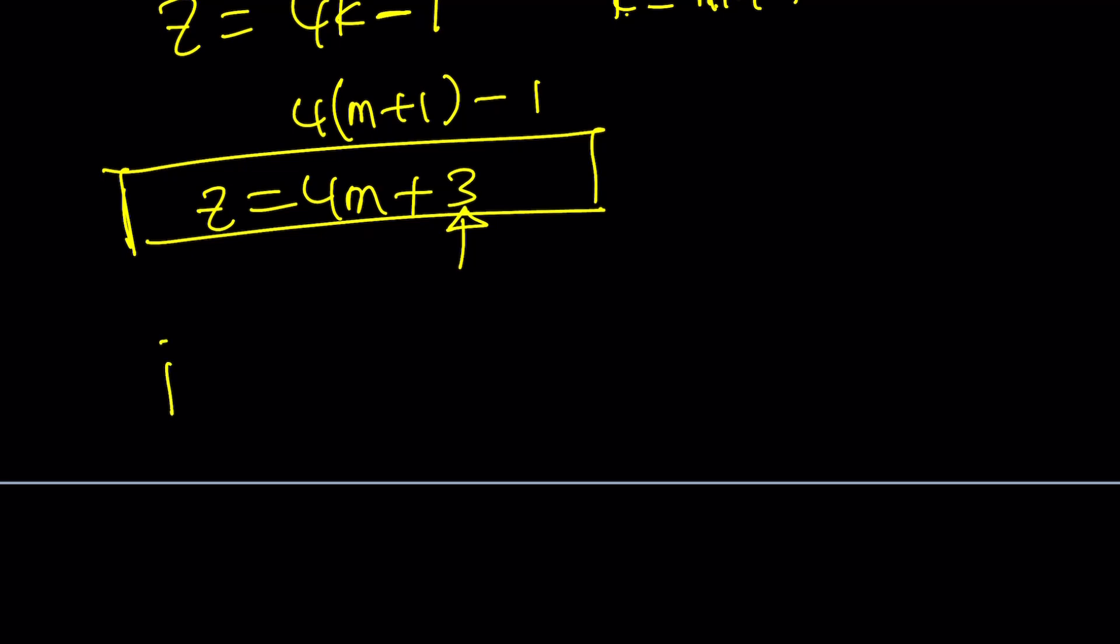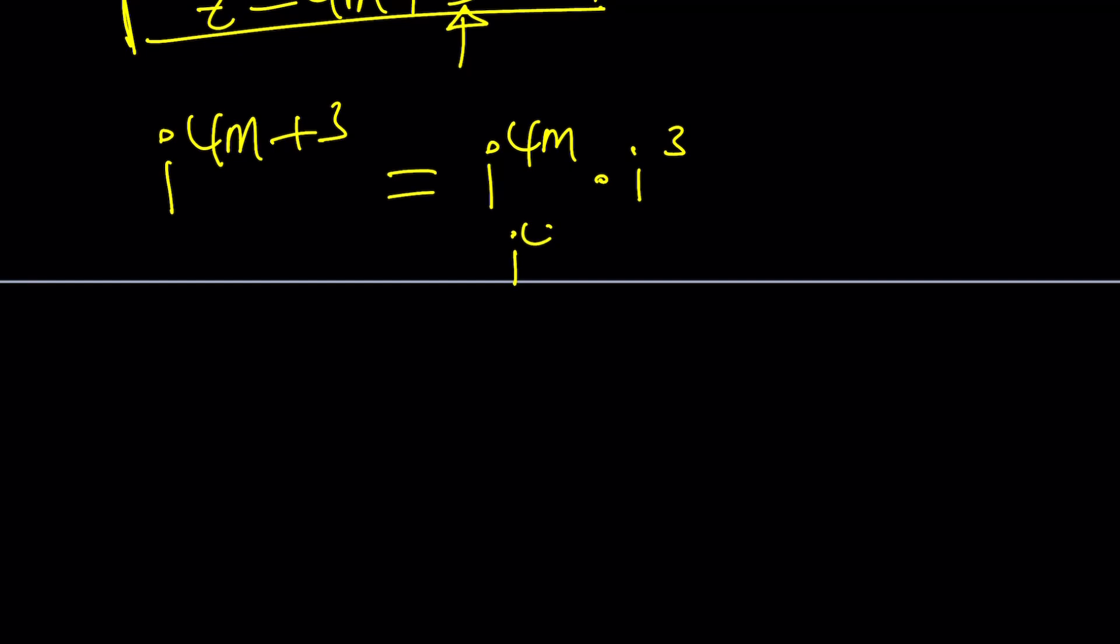Now, why does this work? Because i to the power 4m plus 3 is i to the power 4m times i to the power 3. i to the power 4m is i to the 4 to the m. Remember, m is an integer. i to the 4 is 1. 1 to the power m is 1. i cubed is negative i. And yes, success. We have Houston. We have a solution.